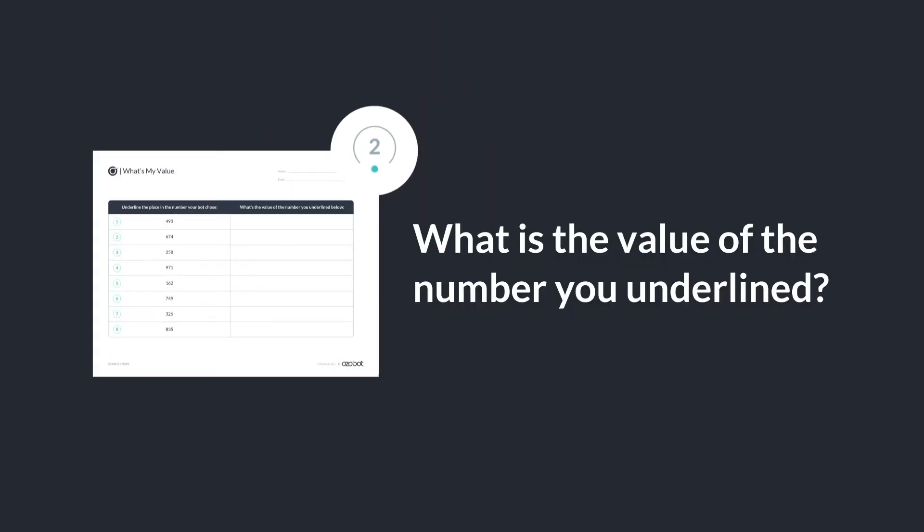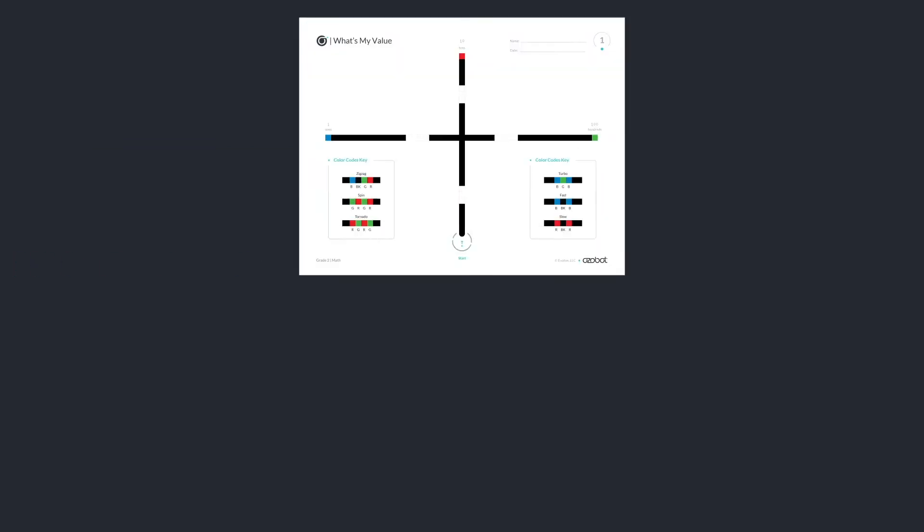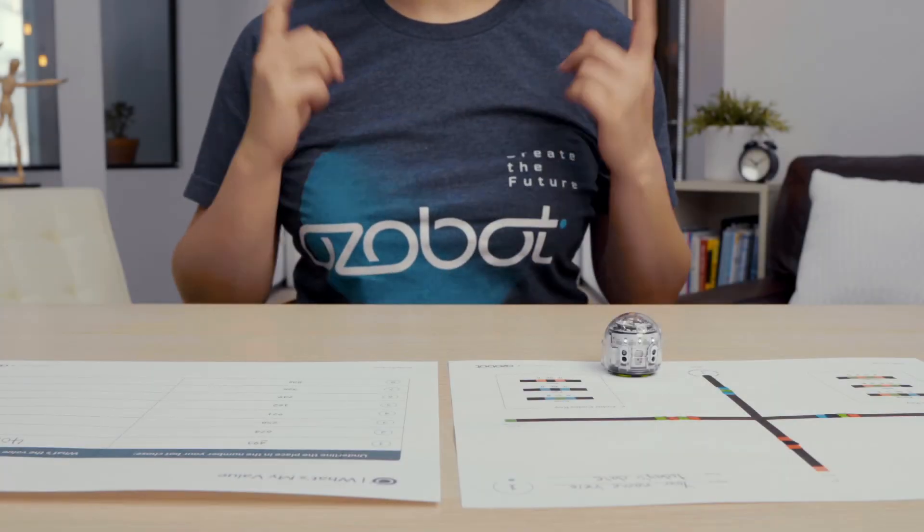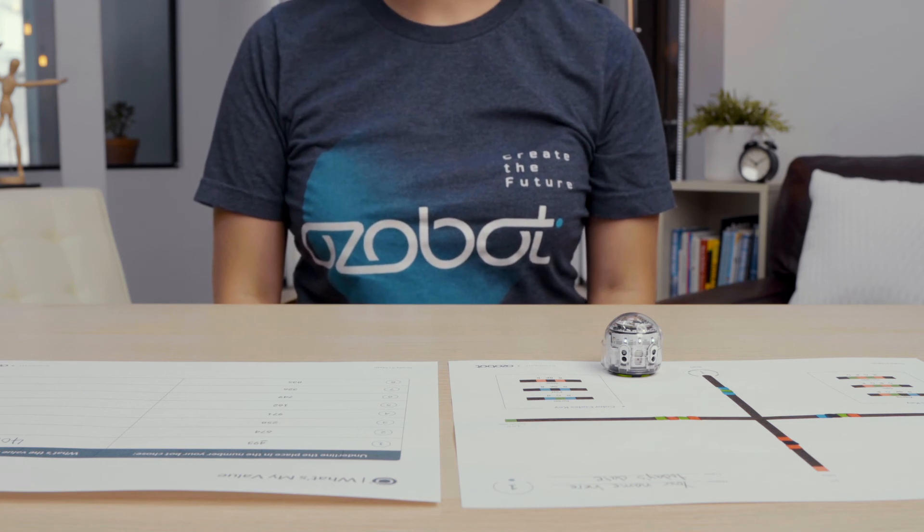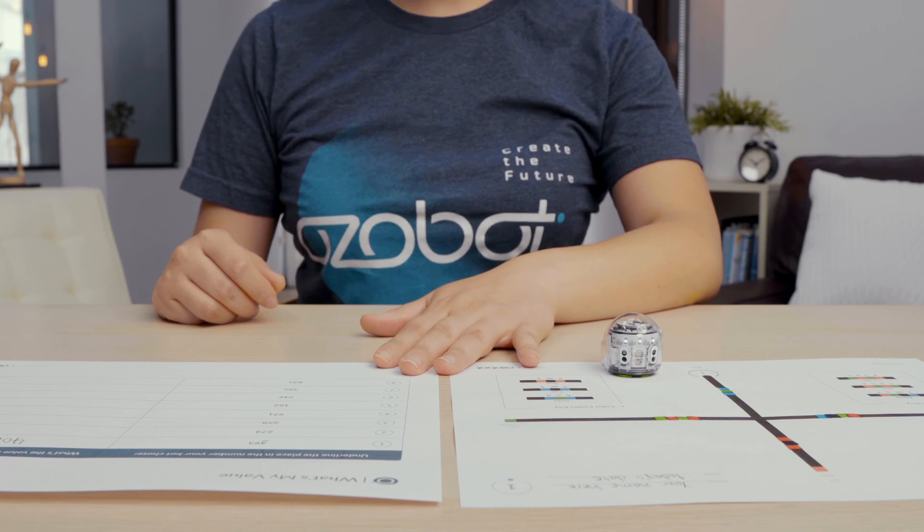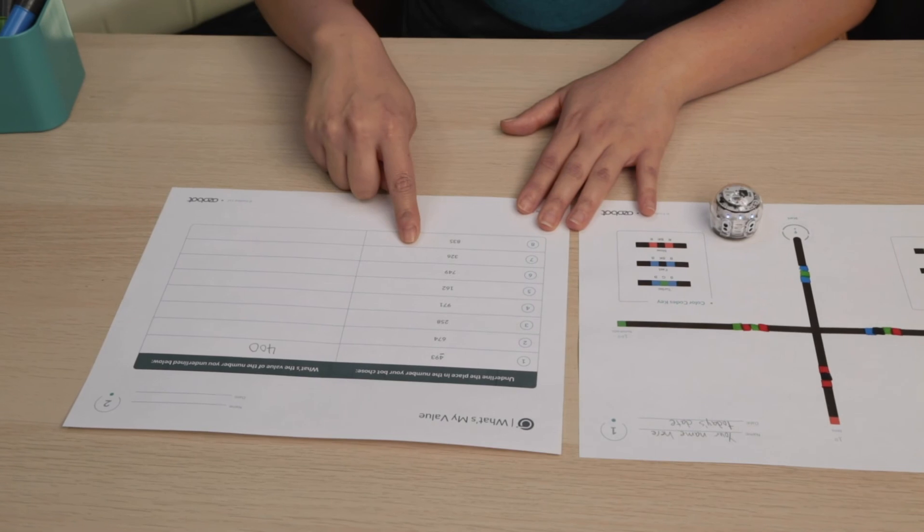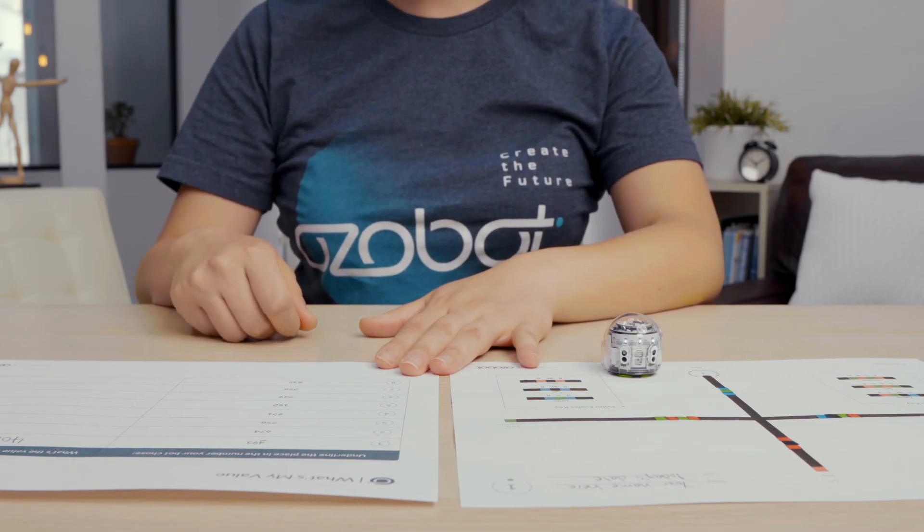What is the value of the number you underline? Can you write this value on your paper? You are on your way to becoming a place value pro, identifying the place of a number and writing its value. To complete this lesson, keep practicing until you have found and shown place value for all eight numbers. You heard that right. You will get to run your bot seven more times.